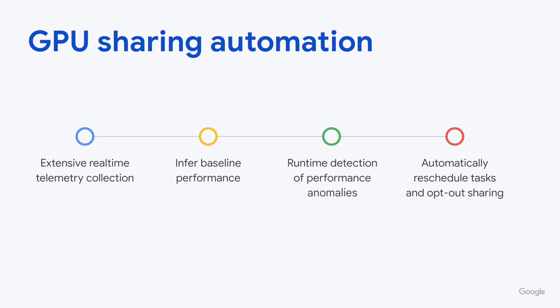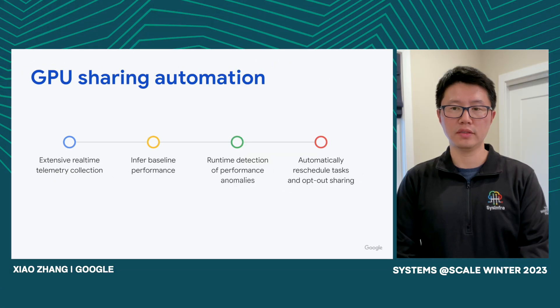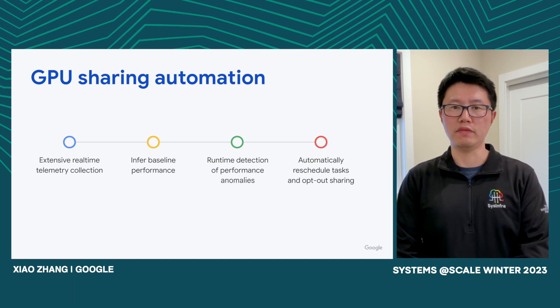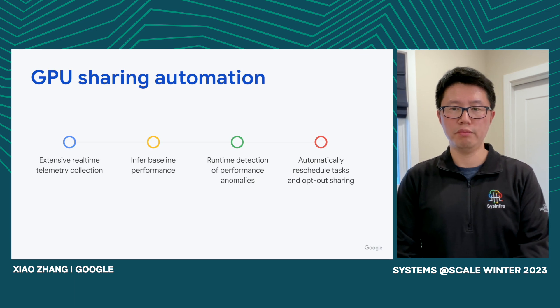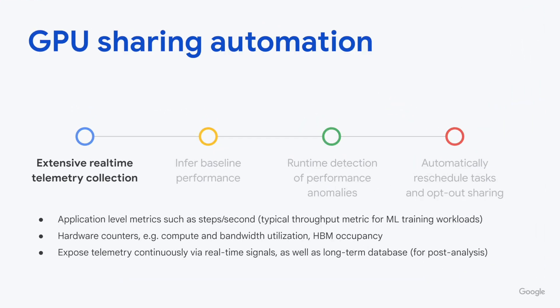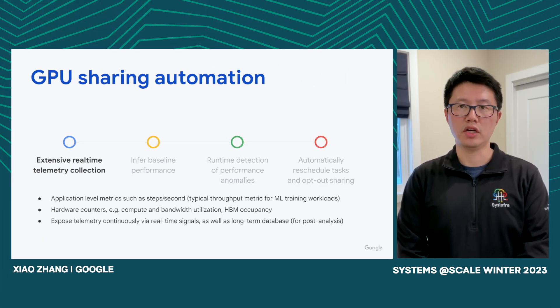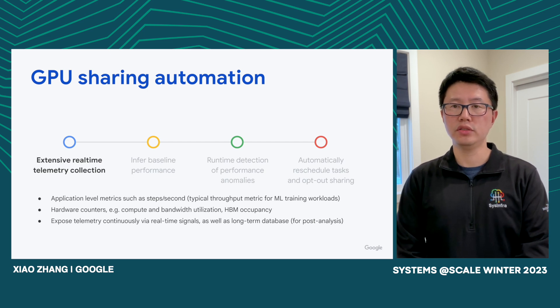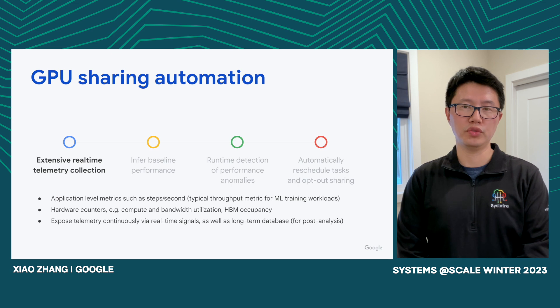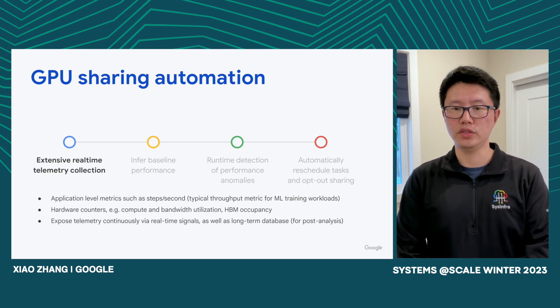Now let's talk about how we automate GPU sharing in our fleet. The prerequisite is that we enable unified memory for tasks participating in GPU sharing, so out-of-memory errors will never happen to them. The automation process has four major components. The first is extensive real-time telemetry collection. We collect application-level metrics such as steps per second — a typical throughput metric for machine learning training — as well as hardware counters like compute utilization, memory bandwidth utilization, and HBM occupancy. These telemetries are exposed continuously via real-time signals for feedback-loop-driven optimization, as well as stored in a long-term database for post-analysis.